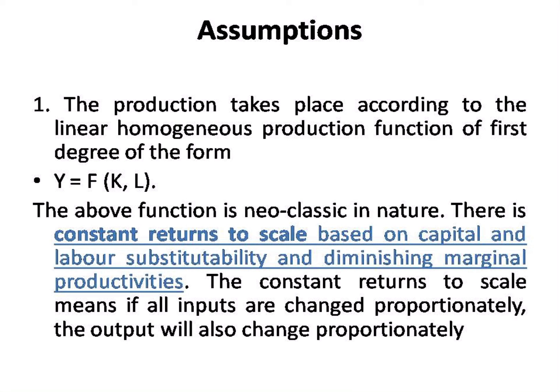The first assumption is the linear homogeneous production function, which is the first-degree form. Here Y is a function of capital and labor, which is neoclassical in nature. The second assumption is constant returns to scale, based on capital and labor substitutability and diminishing marginal productivity.